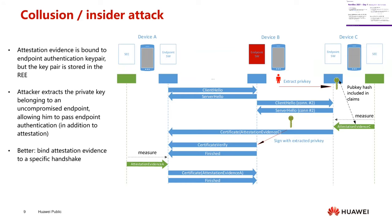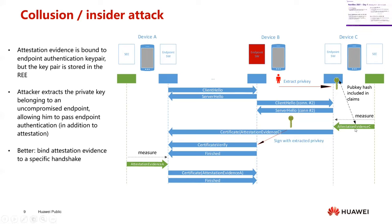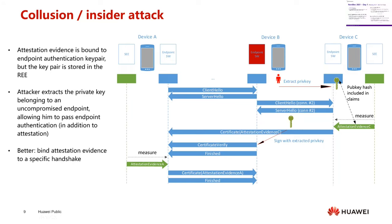Some early proposals for TLS-based trusted channels used the TLS endpoint authentication key, binding the attestation evidence to the authentication key by including a hash of the public key in the attestation claims. But one problem with this is that, unless the key itself is stored in the secure execution environment, an attacker with admin-level access to a valid device can extract the key and then use it in a compromised device to pass TLS endpoint authentication and relay the attestation evidence from the valid endpoint — again breaking the trusted channel guarantee.